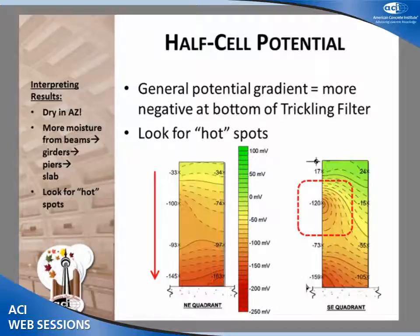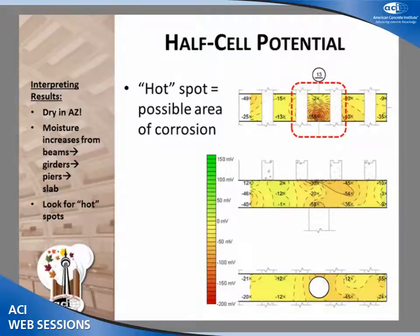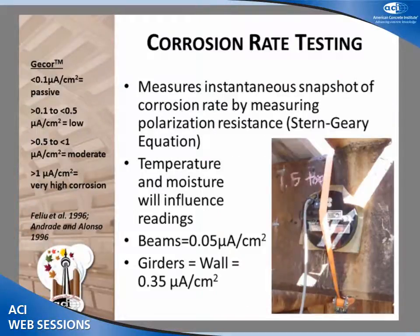That gradient doesn't necessarily mean a higher probability of corrosion at the bottom — it just means it's more saturated there. So we were looking for hot spots: anything that didn't follow that trend. For example, two different piers showed an area not following the expected gradient, potentially indicating ongoing corrosion. Similarly for the beams and girders — a uniform gradient probably means nothing much is going on, but a localized hot spot clued us into areas where we wanted to take cores or do additional investigation.